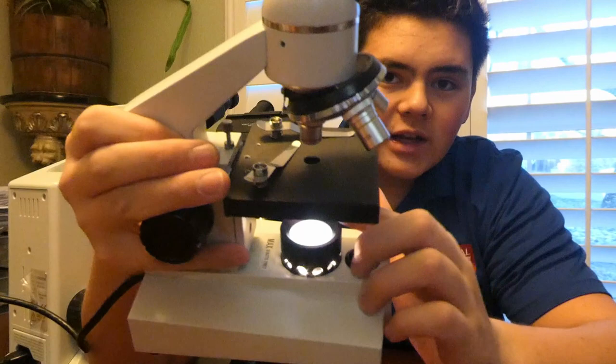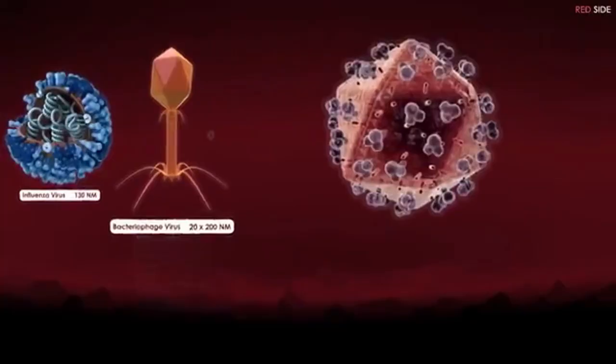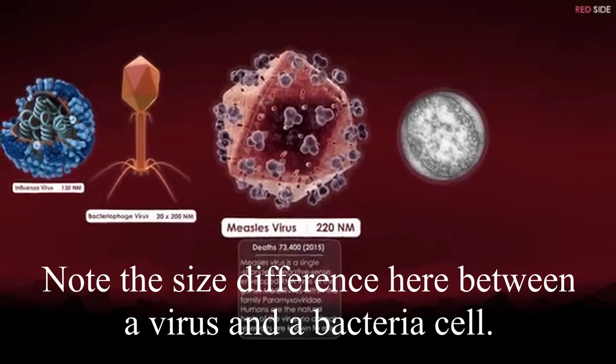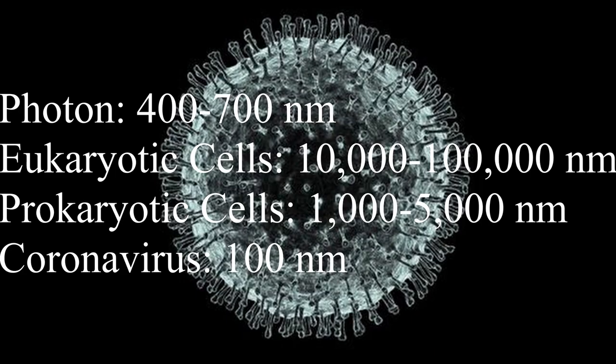However, a typical virus is around 20 to 400 nanometers. Specifically, the coronavirus, which has been in the news lately, is around 100 nanometers. This is much too small for a common light microscope to be used.